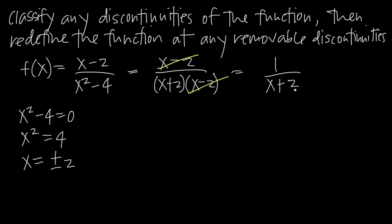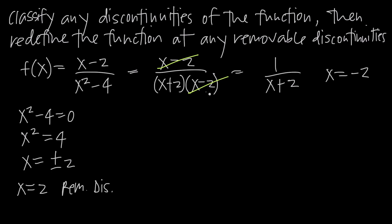After simplifying, we have the function 1 divided by x plus 2. This simplified function is only discontinuous at x equals negative 2, because that's the only value making the denominator equal 0. If x is positive 2, we get 2 plus 2 equals 4, giving us 1 fourth — nothing undefined. This means by factoring and canceling the x minus 2 factor, we were able to remove the discontinuity at x equals positive 2, making it a removable discontinuity.